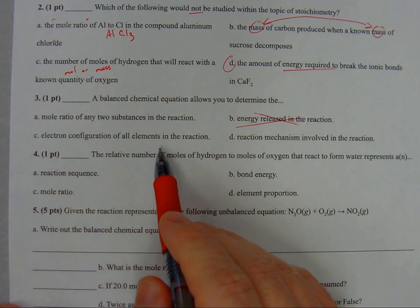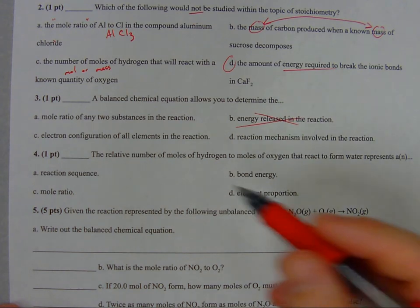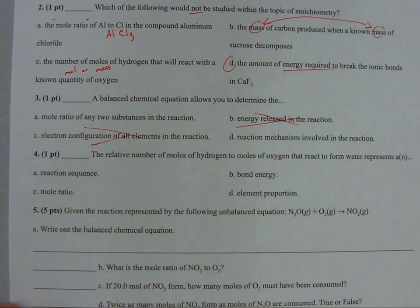Electron configuration of all elements of the reaction. We haven't done electron configurations in a couple of chapters. They're still very useful to be able to do, but we haven't actually done it in a while, so that should be a clue that we're not using that one.